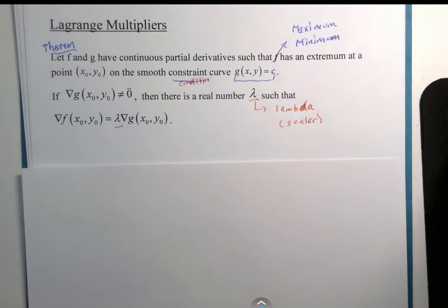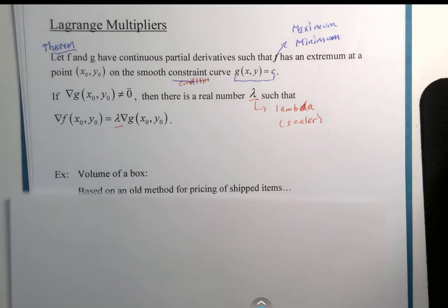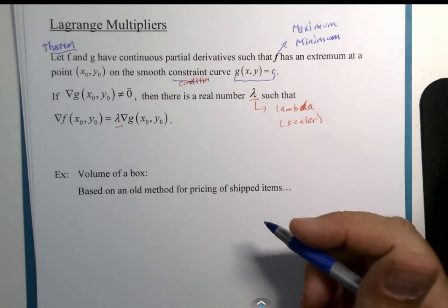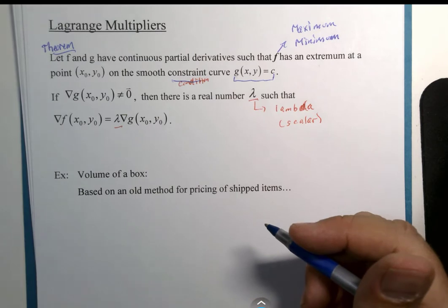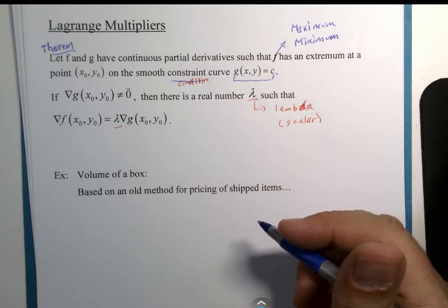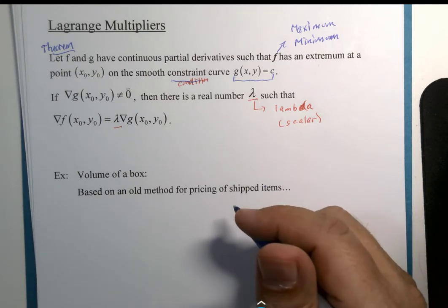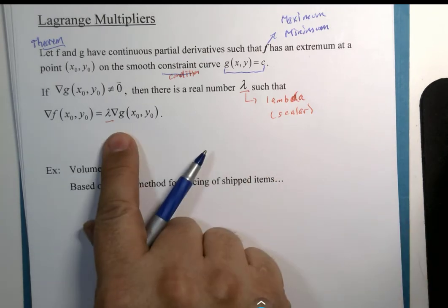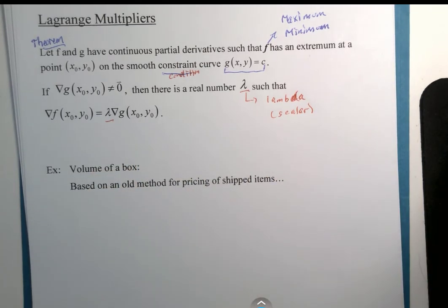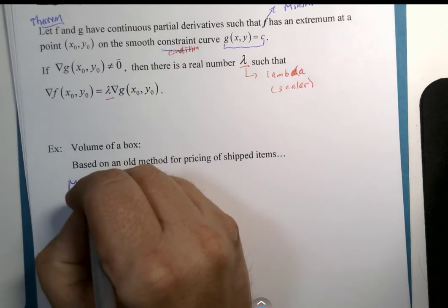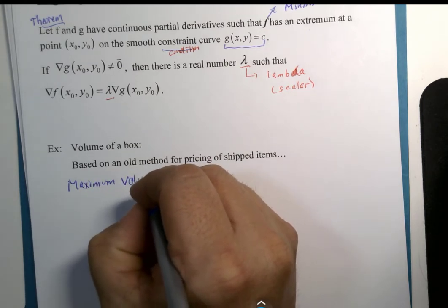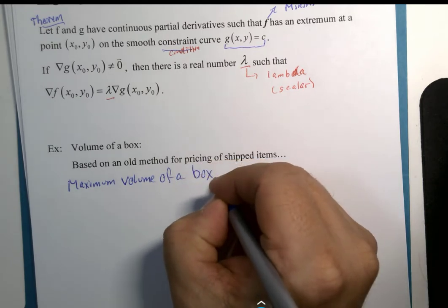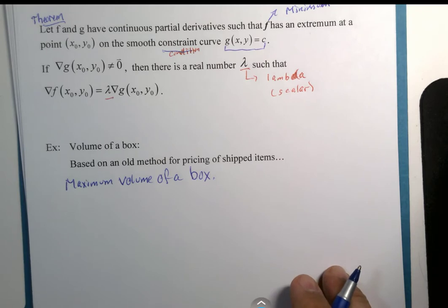So I want to show you a problem that I first saw, I don't know, it might be 35 years ago now. It's a long time ago now. So like before I was born even. That problem I think was related to how packages were charged for shipping a long time ago. It's not algebraically as difficult but it lets you see several different aspects of this at once. So the idea is that we're going to find the maximum volume of a box. And we're talking about a rectangular box.